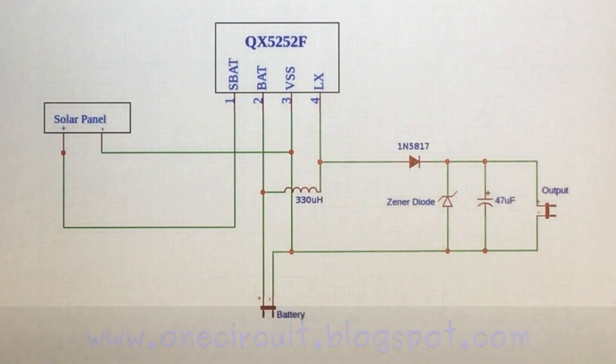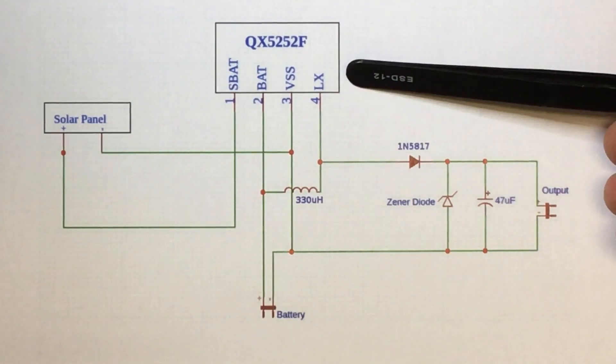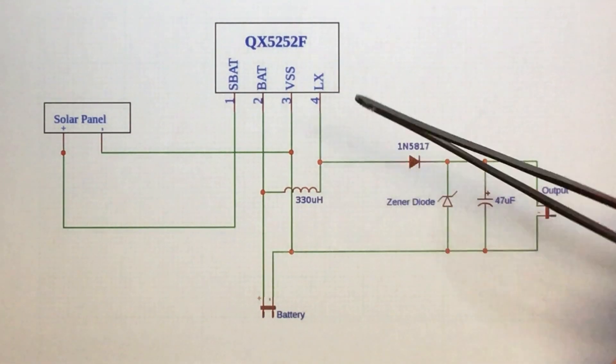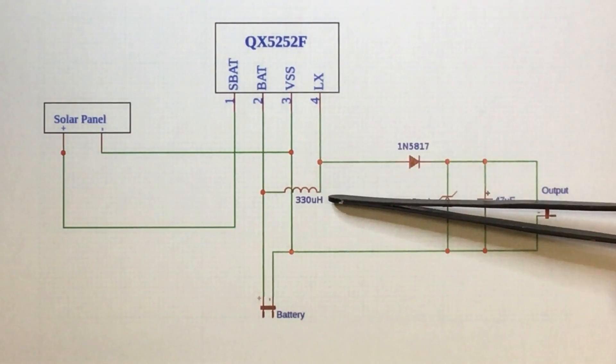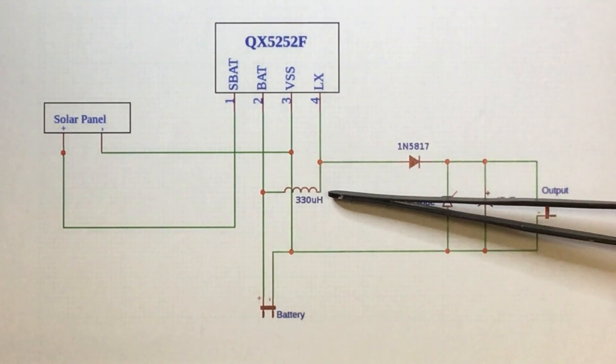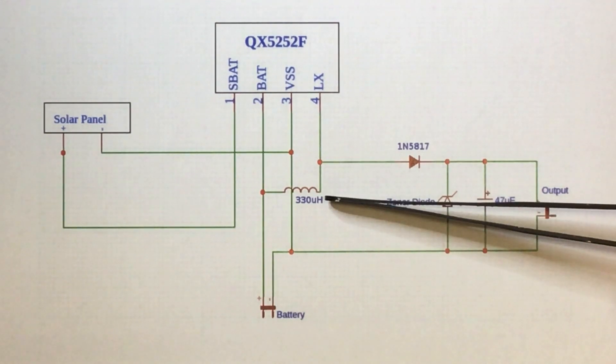This is our old favorite, the stable joule thief. We've gone over this probably too many times, but just for those new to the game, it's driven by the QX5252. Solar panel comes in, and you've got an inductor here. I've been playing with the values, so it provides minimal current just to run a microcontroller.